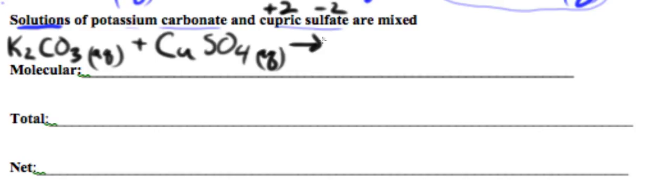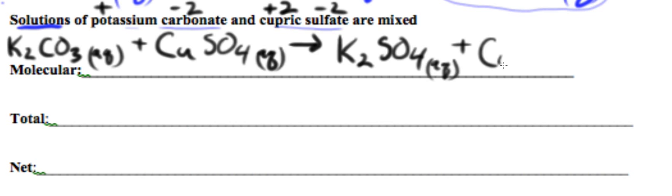Now we can do this double replacement reaction. So potassium is going to go with sulfate. Remember, potassium is plus 1. Carbonate is minus 2, so we're keeping the 2 here because we're dealing with minus 2 as our anion. That is soluble, and then we're going to get copper 2 carbonate, and that is a precipitate.